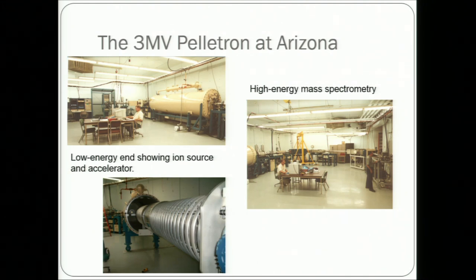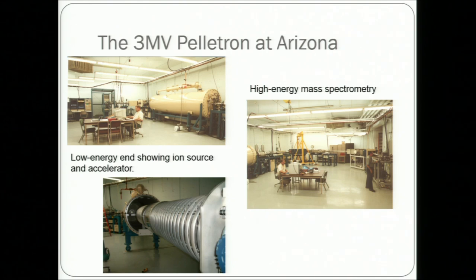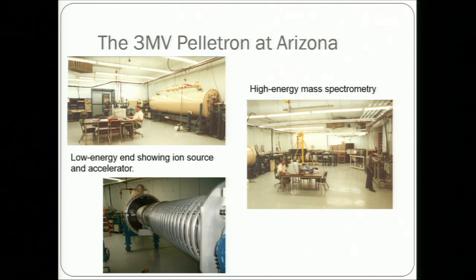There was also an idea to use cyclotrons for C-14 measurements, pursued by Rich Mueller at Berkeley, which had some success. But one problem was that with a cyclotron, normalizing C-14 to the stable isotope to know how much C-14 is in your sample would be trickier. This is a picture of the 3 million volt NEC machine in Arizona. In the year 2000, we were still using relatively large accelerators for carbon-14 measurements.